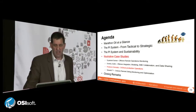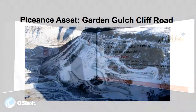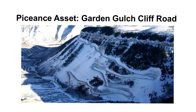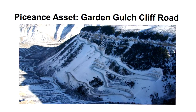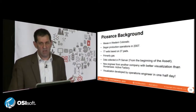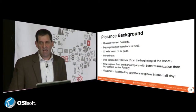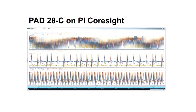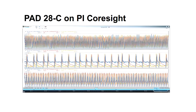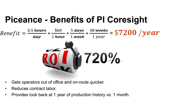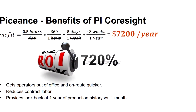Another use case is Piance in Colorado. We had a new engineer — we'll call him Steve — who came from another company and was used to a good visualization package. We sent a couple of interns over to the Piance office, and within half a day they had shown him the Core Site visualization. He developed all the graphics he needed in half a day. That saves an operator a half hour a day, which ends up being $7,200 a year in savings per operator.